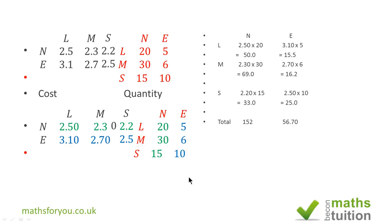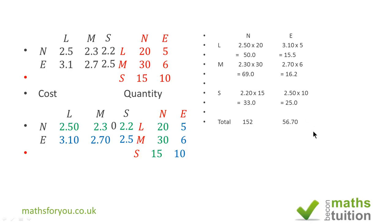These are all set up in the right-hand half of the slide. For normal coffee, we took £50 + £69 + £33, giving us £152. For espresso, we took £15.50 + £16.20 + £25, giving us £56.70.